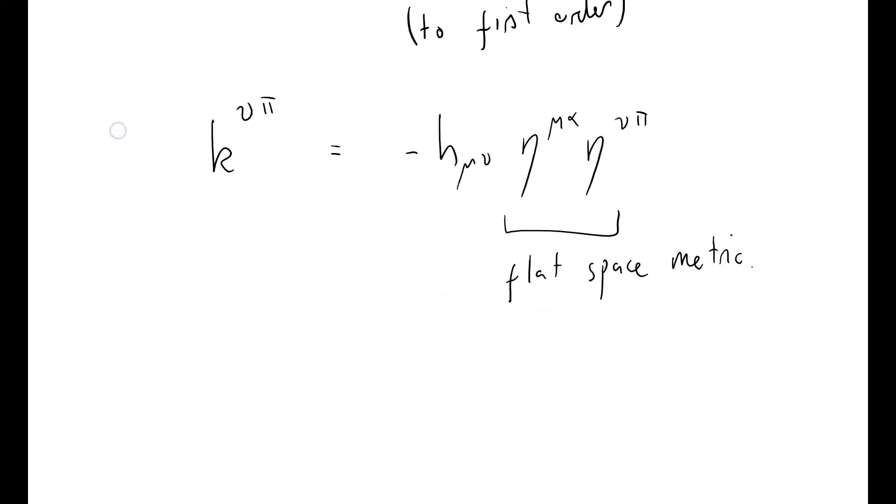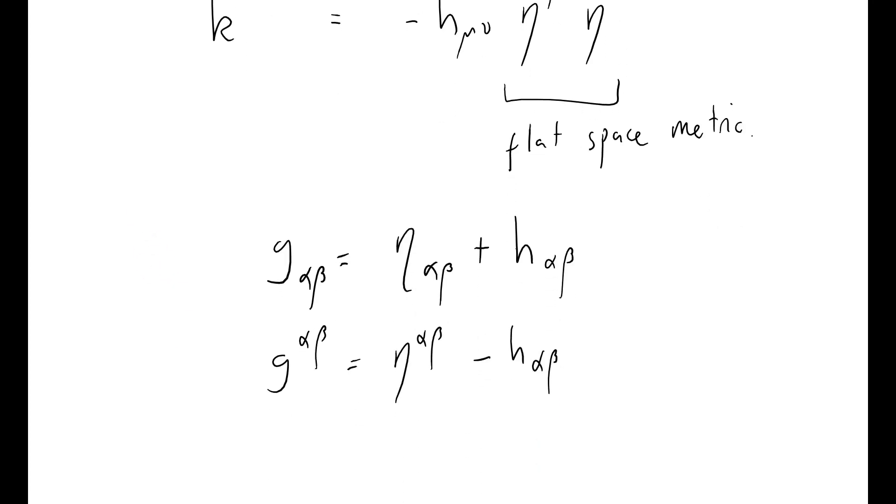So to summarize all of this, we know that G alpha beta equals eta alpha beta plus H alpha beta. We know that G alpha beta with upstairs indices equals eta alpha beta. Sorry, that's eta alpha beta minus H alpha beta. Oh, no, that's downstairs. It's got to be upstairs. Alpha beta. You see, these tensor equations have got to be consistent in the placing and number of their indices. And we've got two downstairs indices, two downstairs, two downstairs. Here we've got two upstairs, two upstairs.